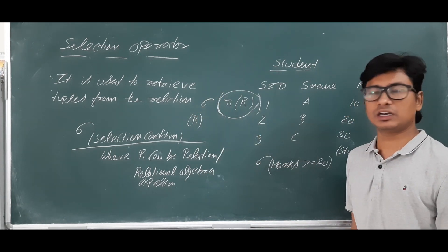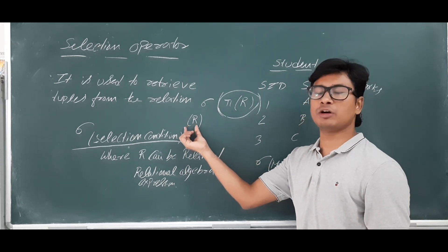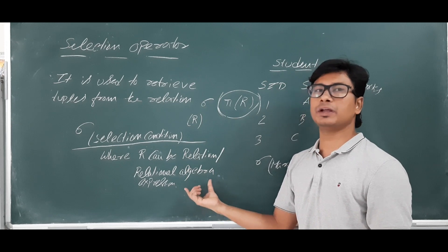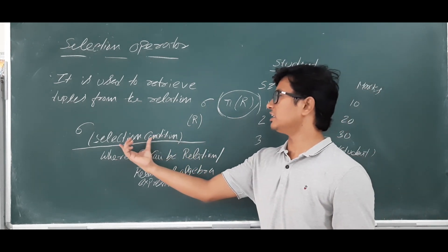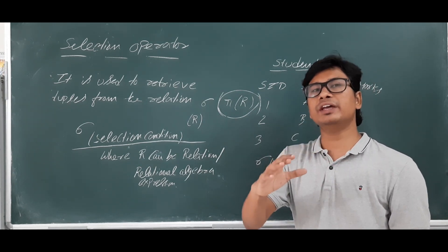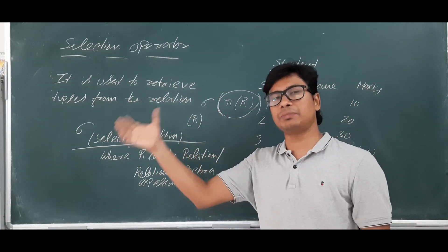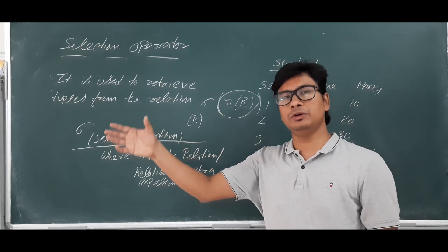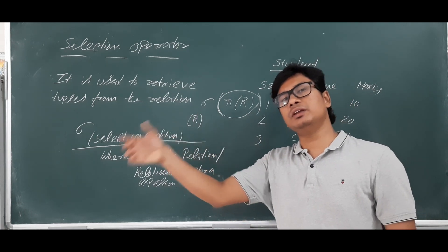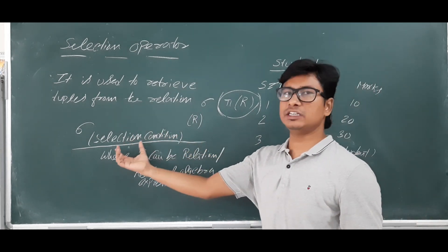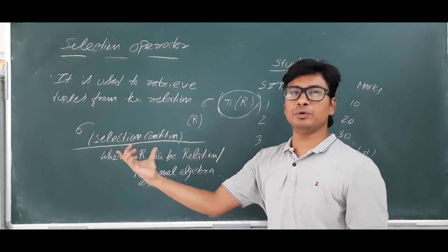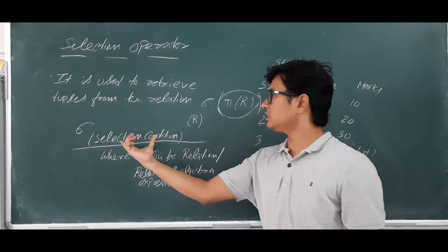You can directly apply the selection operator on a relation R, or on a relational algebra expression. Now, what is the selection condition? In SQL, we write WHERE attribute_name = some condition, or WHERE attribute_name = some constant, or WHERE some condition operator value. Similarly in relational algebra, we mention the condition we want to apply.